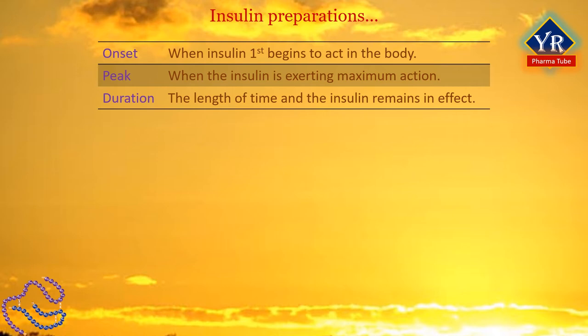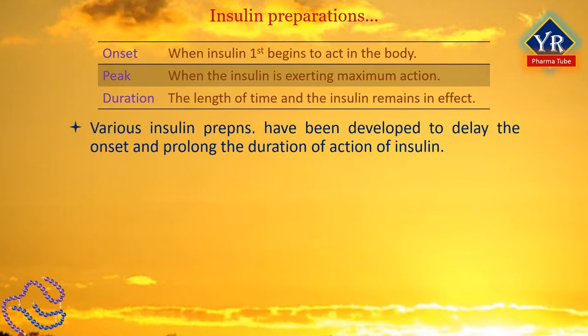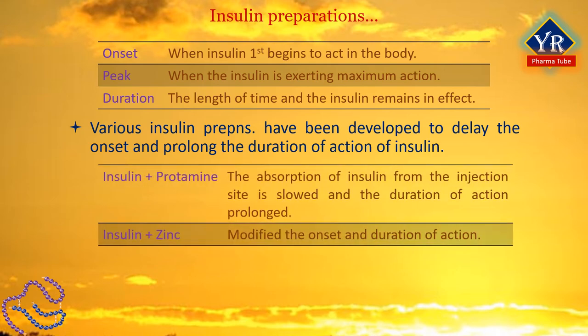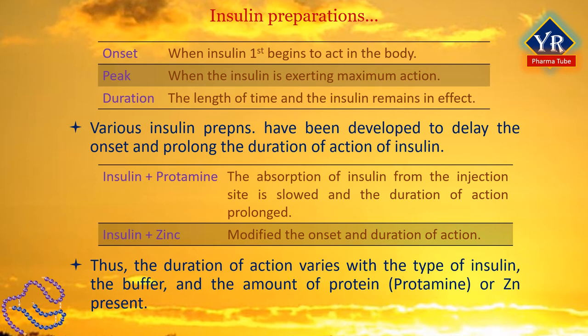Peak is when the insulin is exerting maximum action, and duration is the length of time the insulin remains in effect. To meet the needs of diabetic patients, various insulin preparations have been developed to delay the onset and prolong the duration of action of insulin. When insulin is combined with protamine, a protein, the absorption of insulin from the injection site is slowed down and the duration of action is prolonged. The addition of zinc also modifies the onset and duration of action of insulin. The duration of action varies with the type of insulin, the buffer and the amount of protein — protamine or zinc — present.